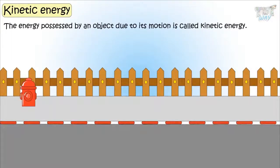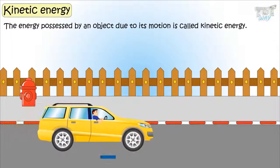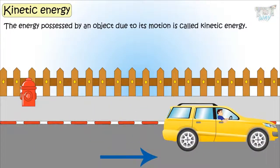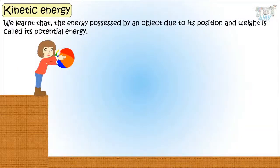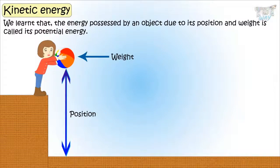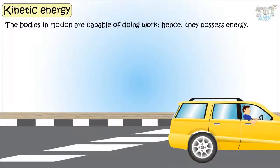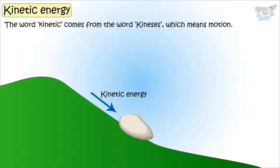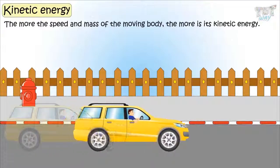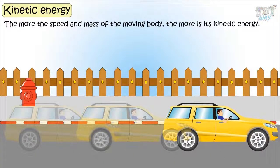Kinetic energy. Energy possessed by an object due to its motion is called kinetic energy. We learned that energy possessed by an object due to its position and weight is called its potential energy. The bodies in motion are capable of doing work and hence possess energy. The word kinetic comes from the word kinesis, which means motion. The more the speed and mass of the moving body, the more is its kinetic energy.